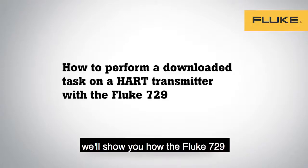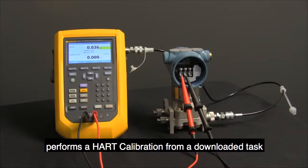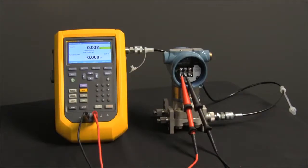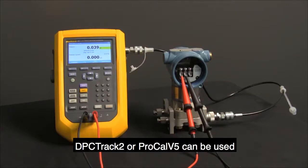This video will show you how the Fluke 729 Automatic Pressure Calibrator performs a HART calibration from a downloaded task. This unit already has a downloaded task from our software, which DPC Track 2 or ProCal V5 can be used.